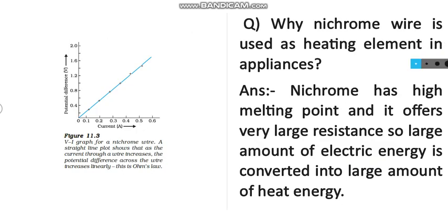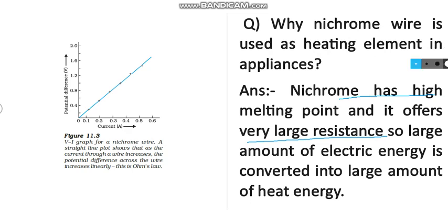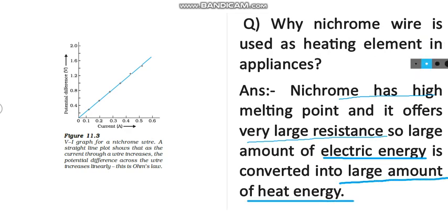Why is Nichrome wire used as a heating element in appliances? Because its melting point is high and it offers large resistance. So a large amount of electric energy is converted into heat energy. That is why Nichrome is used as a heating element in appliances.